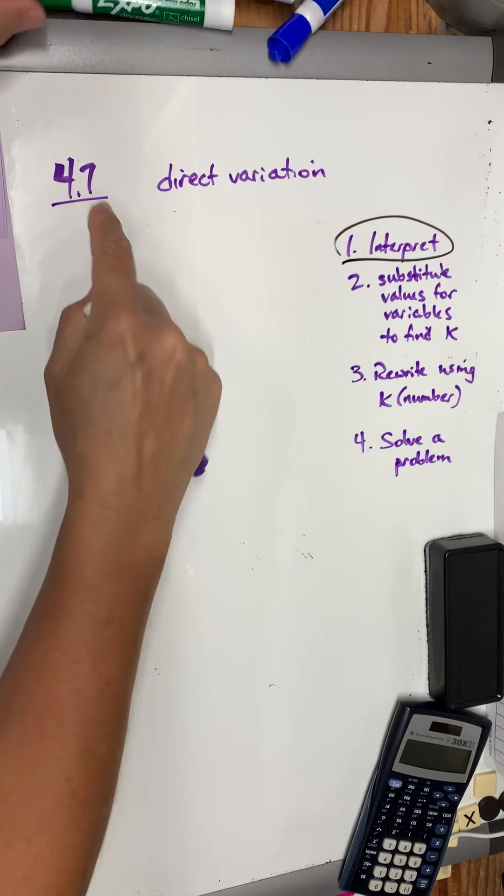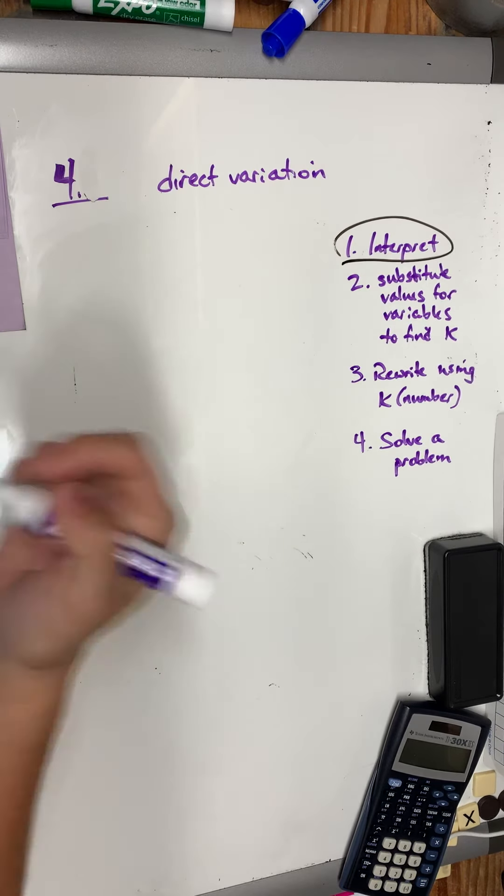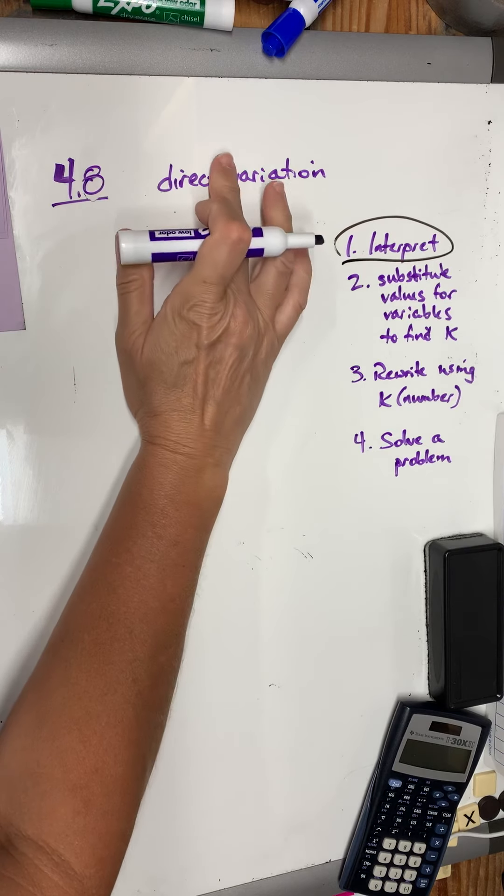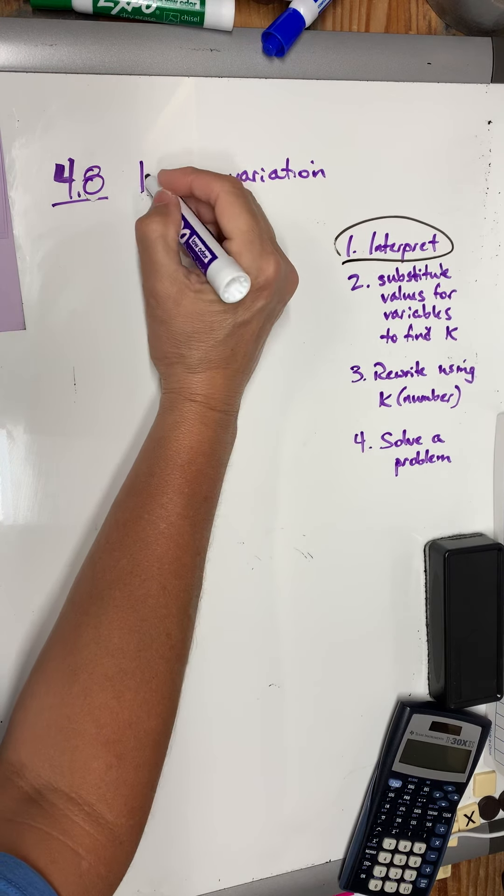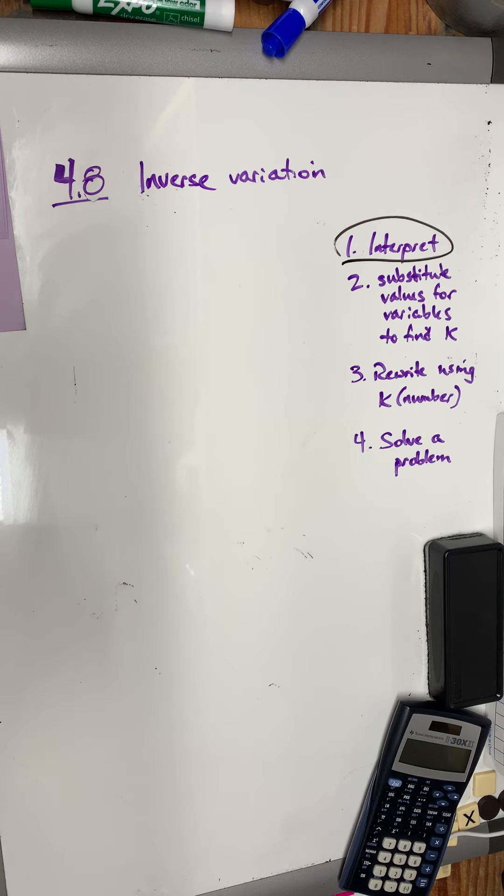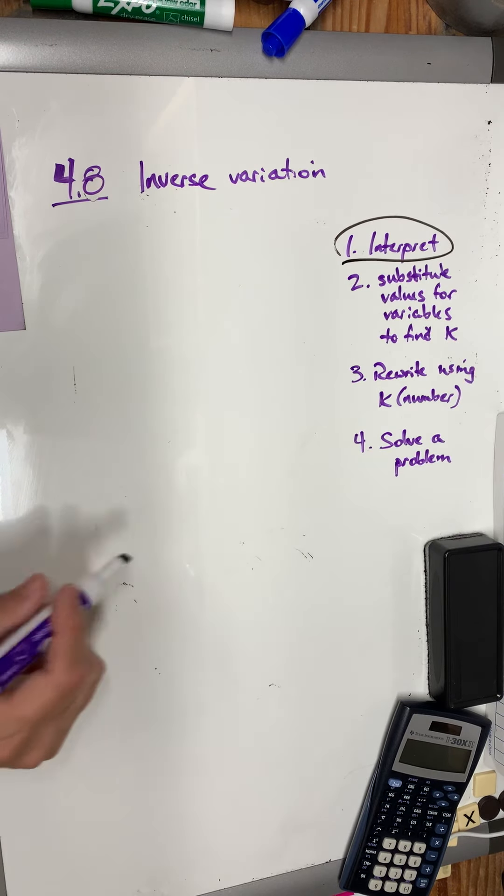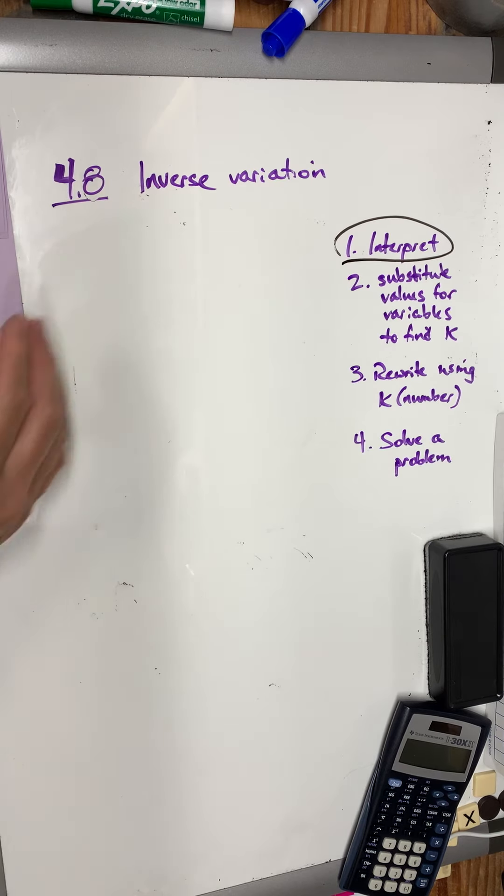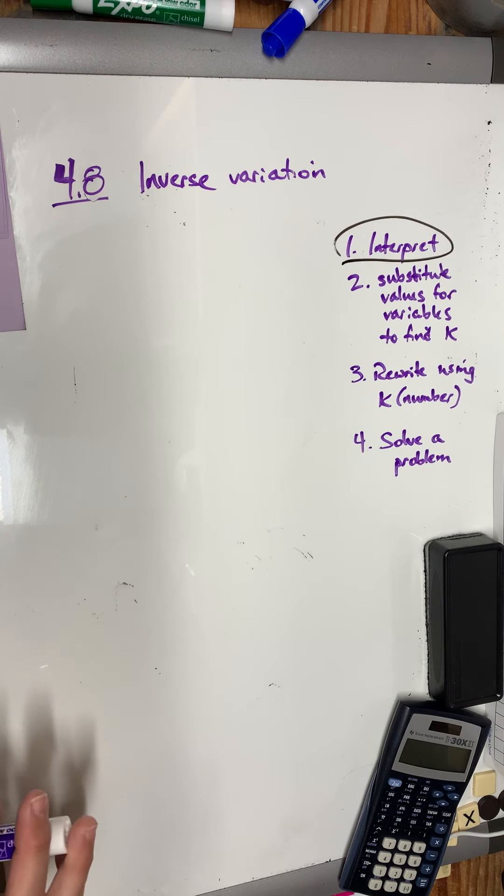Hi, this is section 4.8, which is called inverse variation, which is just the opposite of what we did on 4.7. We would still follow these four steps, but because it's inverse, then the x value, or whatever the variable is, is going to be under the k.